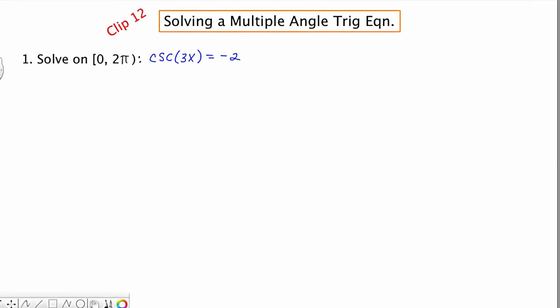In this clip, I'm going to solve a multiple angle trig equation, and what that is, is a trig equation in which the trig function is not just the sine of x, or the cosine of x, or the tangent of x. There is some other number preceding the x, some other number other than 1. So anytime there's a number in front of x other than 1 in a trig equation, I call that a multiple angle trig equation.